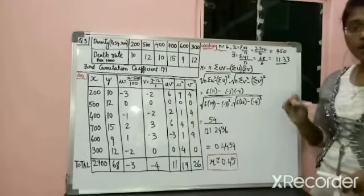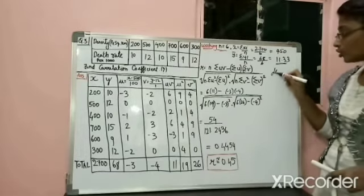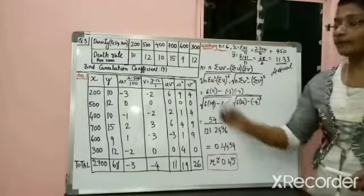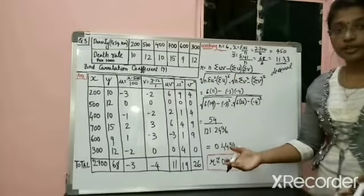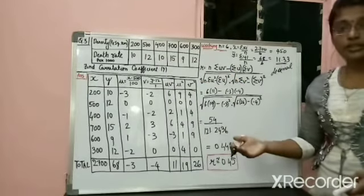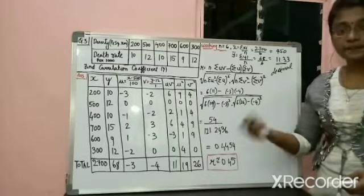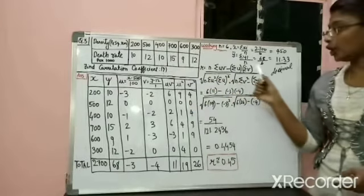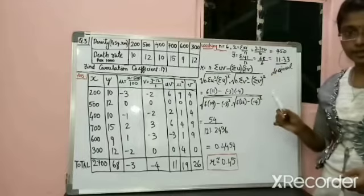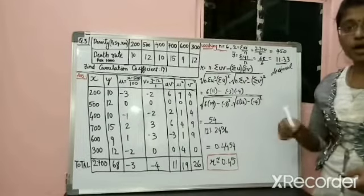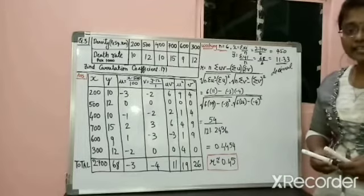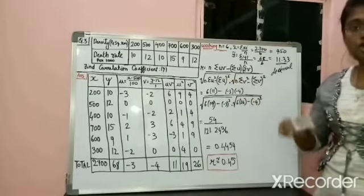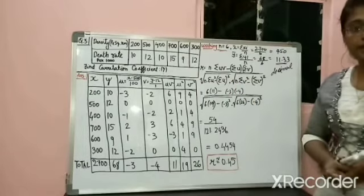See the y variable mean is in decimal, and also the units of the x variable are large numbers. So which method are you going to adopt? The third method — the UV method. As I said in earlier videos, whenever your variable units are large and the mean is in decimal rather than a whole number, you have to use the third method, that is the UV shortcut method.